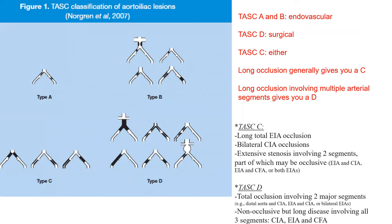Another important concept is the TASC classification — TASC A through D — which classifies anatomical complexity for iliac and SFA disease. TASC A and B: endovascular therapy is recommended. TASC D: surgery is generally recommended. TASC C: either strategy can be used. In summary, a long occlusion of one segment generally gives TASC C — complex but still acceptable for endovascular therapy. A long occlusion involving multiple arterial segments gives TASC D.